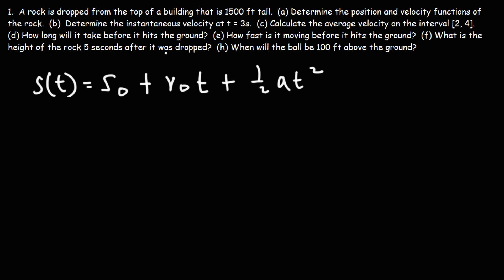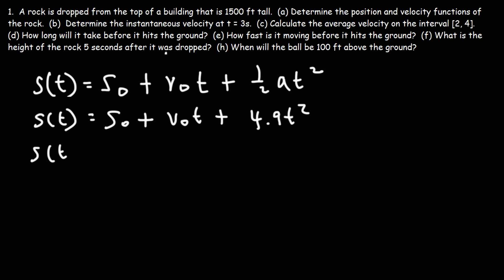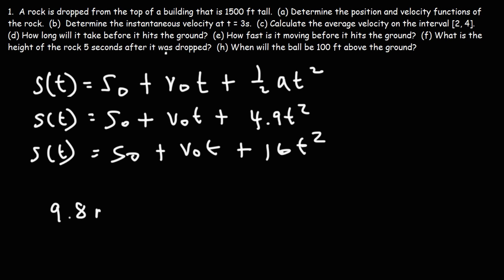In calculus, you may see two different variants of this function. Sometimes you'll see 4.9t squared, and other times you'll see 16t squared. This has to do with the units of acceleration. On Earth, the acceleration due to gravity is 9.8 meters per second squared. To convert meters to feet, you multiply by 3.28, so 9.8 times 3.28 gives approximately 32 feet per second squared.